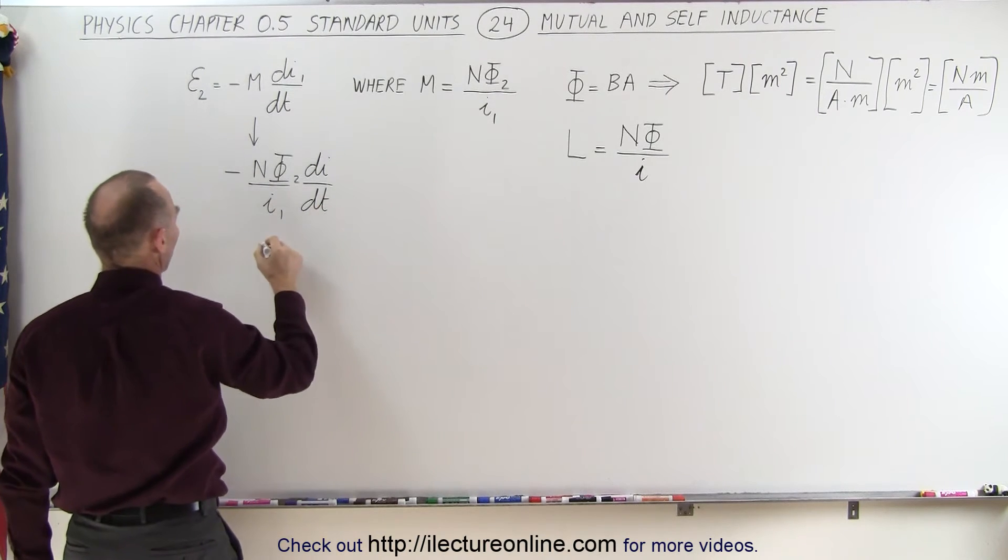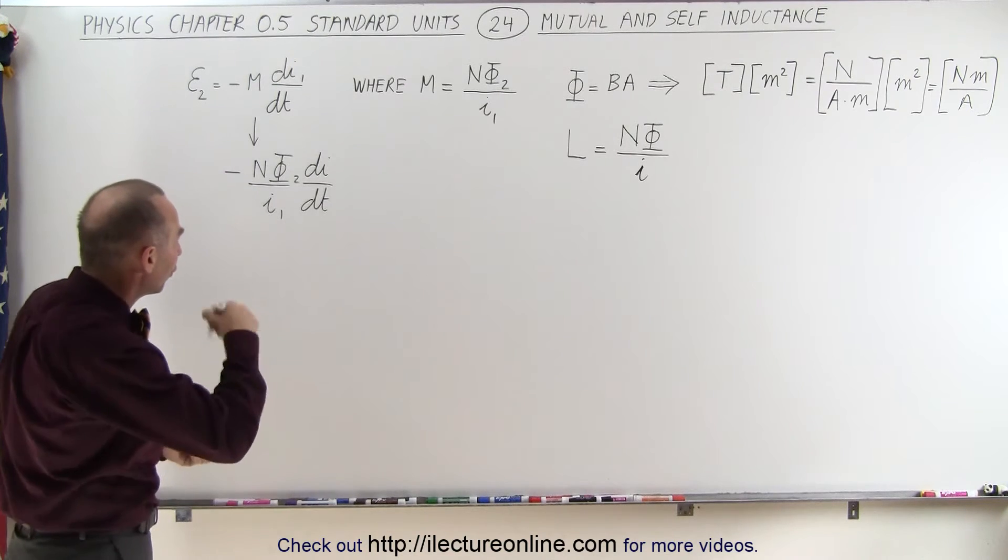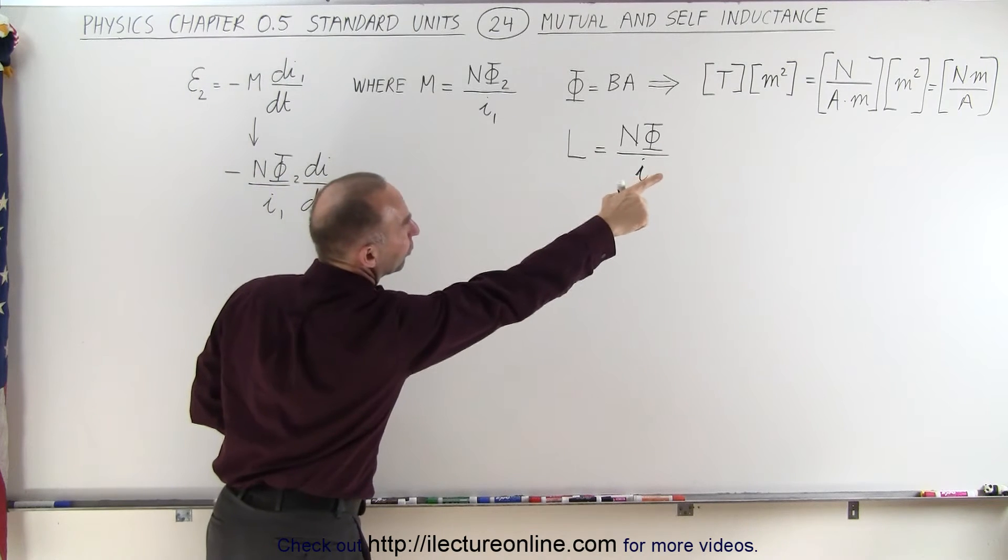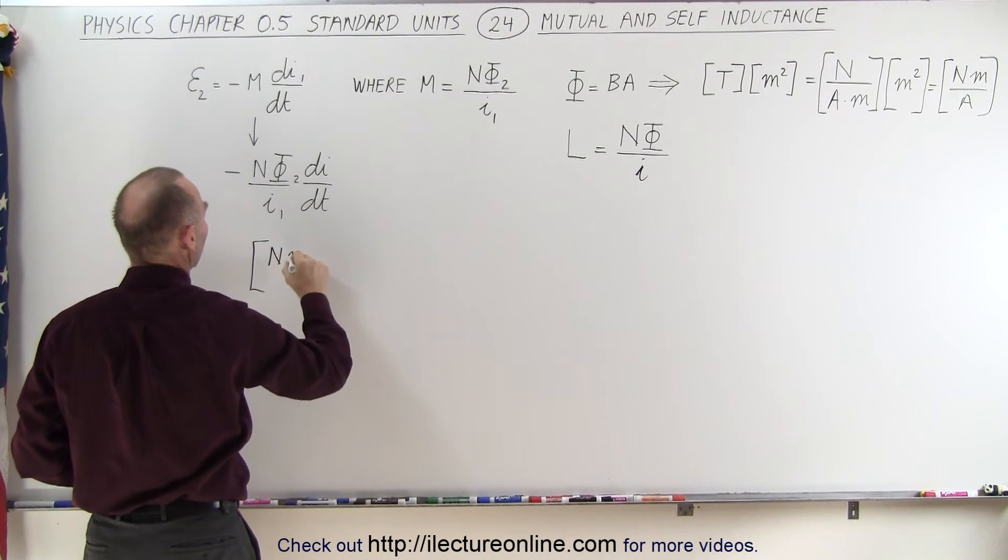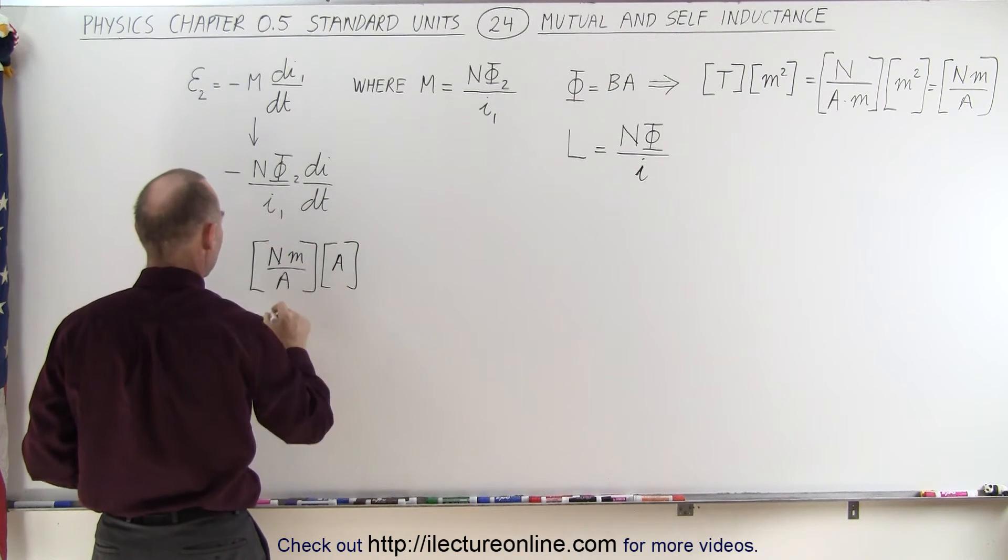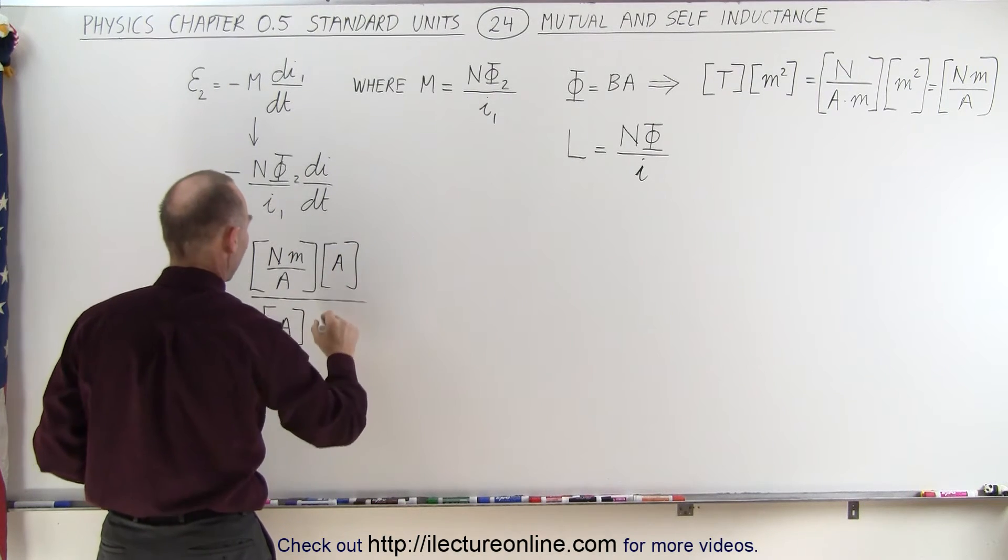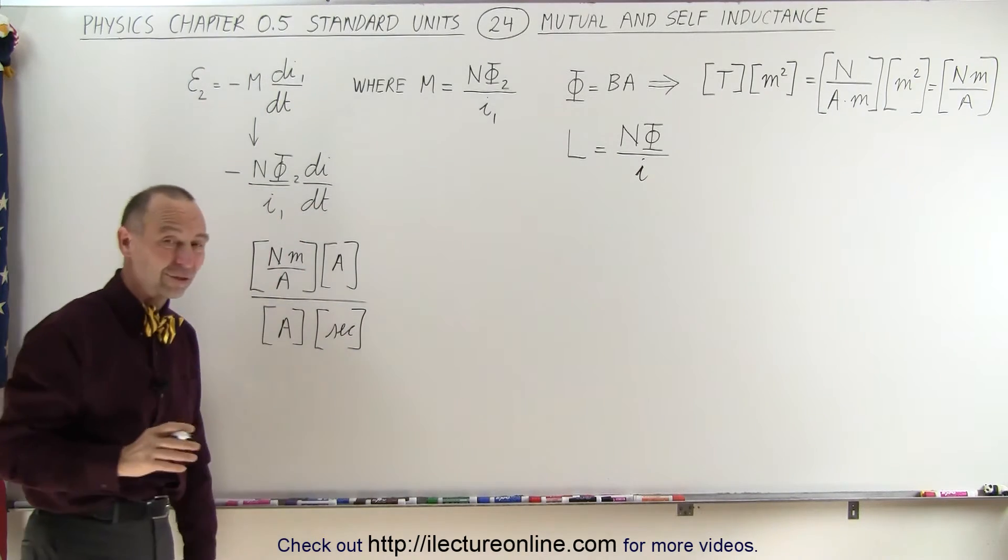And if we now want to write the units in there, there's no units for N because that's simply a number of turns in the coil. We do have the flux there. We found units for flux, which is newtons meters per amp. And the units for current, which is amps. Then we have the units for current down here. That would then negate the amps right here. And then we have the units for time, which is seconds. And somehow that should all converge to voltage. Let's see if it does.